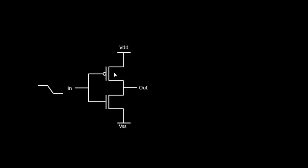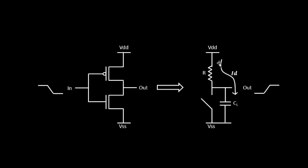Let's take the same circuitry: we have the PMOS, NMOS, and the CMOS inverter, and this is the current equation. This is the drain current ID — the current that flows from the supply voltage onto the capacitor. The output waveform shape is a function of resistance, and the drain current is also dependent on this particular resistance.